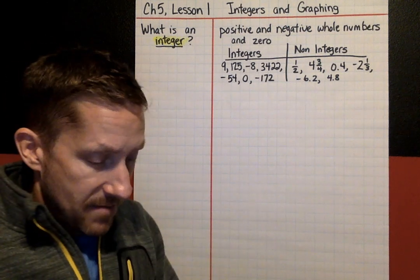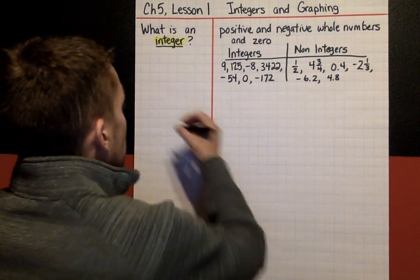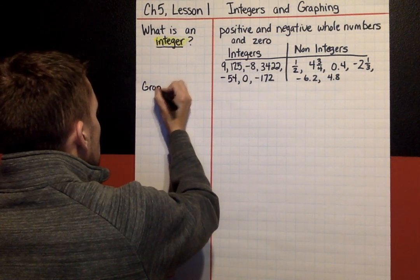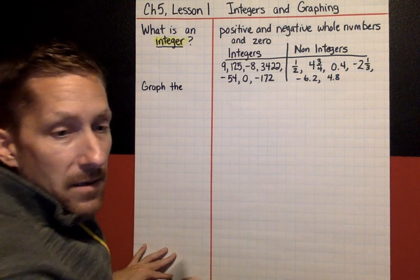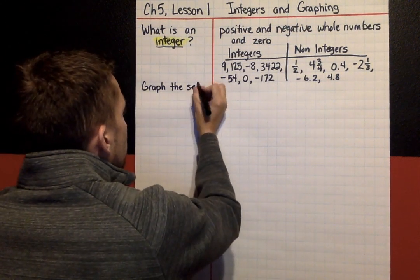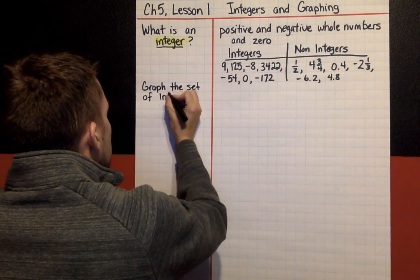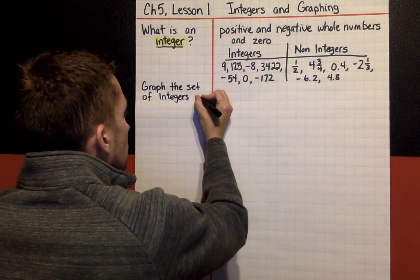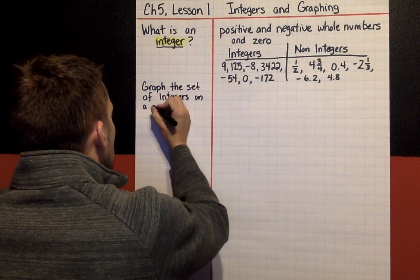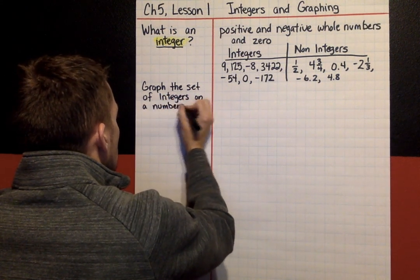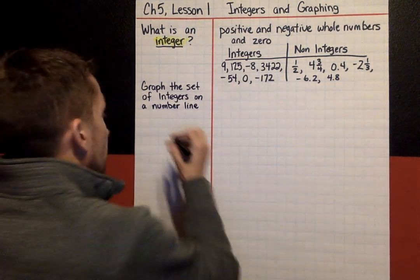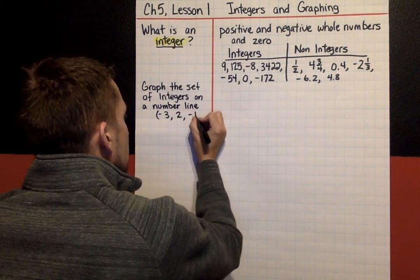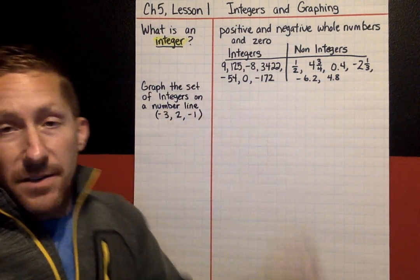Now you've got integers — the meaning of an integer. Next we're going to talk about graphing integers and we're going to graph the set of integers on a number line. The integers we're going to graph are negative 3, 2, and negative 1.